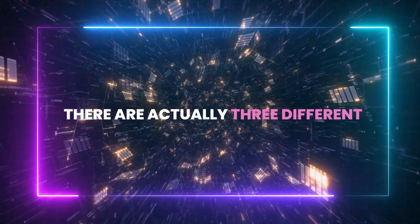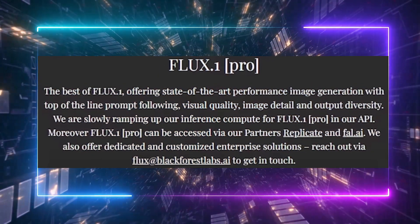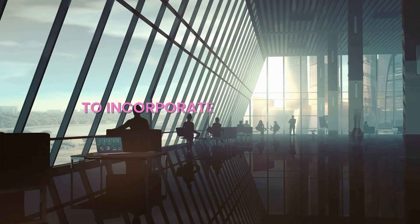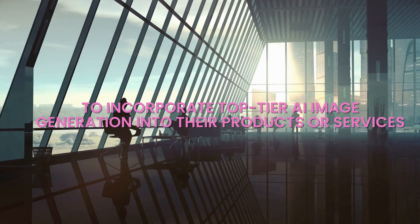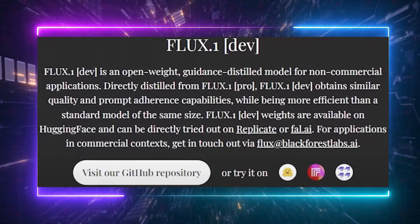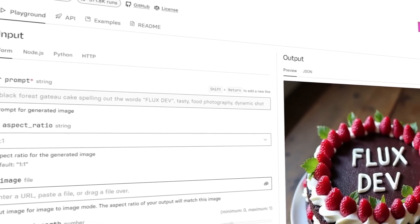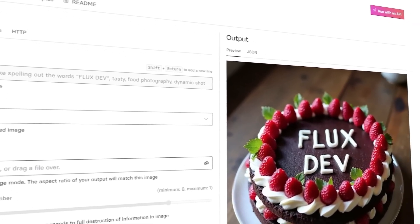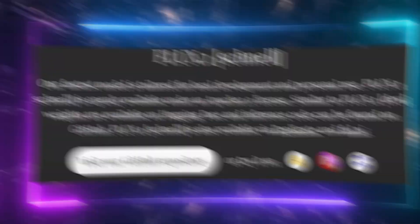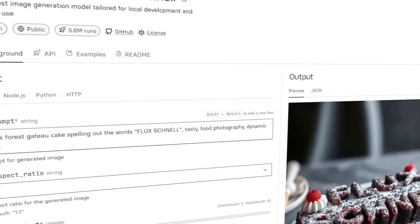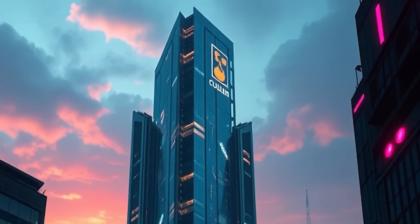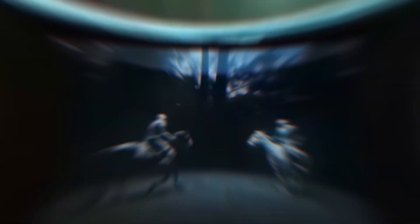There are actually three different versions of Flux. First up is the Pro version, designed for commercial use — the heavy-hitter tailored for companies looking to incorporate top-tier AI image generation into their products or services. Then there's the Dev version, a solid middle ground that's still powerful but not as robust as Pro, making it ideal for projects that don't require full-scale capabilities. And lastly, there's the Schnell version — Schnell means fast in German, and it lives up to its name, generating an image in just two or three seconds. It's the lightweight, quick-performing model perfect for those who need rapid results.